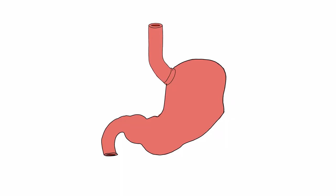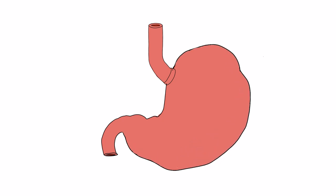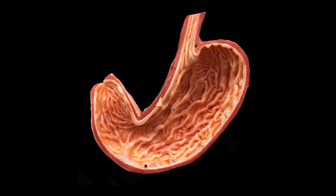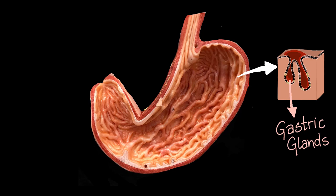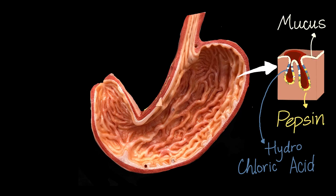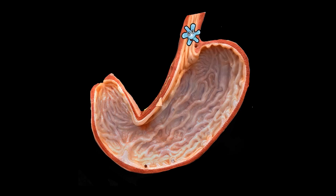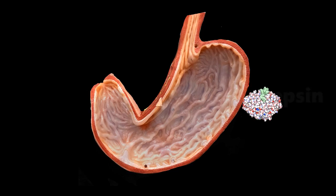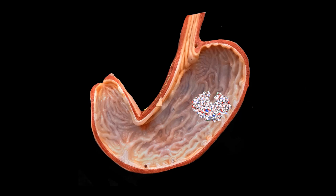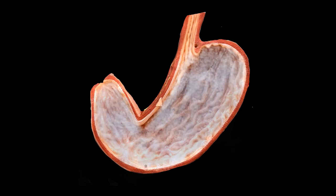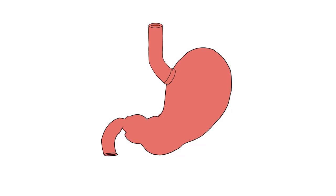The food then arrives at the stomach. Depending on how much food you've eaten, your stomach expands — it can expand 3 to 4 times its normal size. The stomach walls are very muscular and help mix food with digestive juices. Gastric glands in the stomach walls release hydrochloric acid, pepsin, and mucus. Hydrochloric acid kills any bacteria or viruses in the food and creates an acidic environment necessary for pepsin to be active. Pepsin helps in protein digestion. Mucus protects the stomach walls — without it, hydrochloric acid would digest the stomach walls themselves.